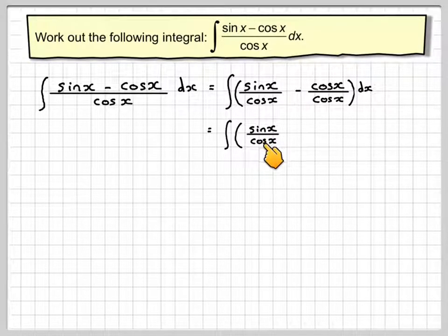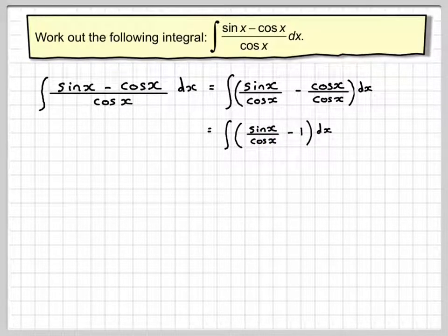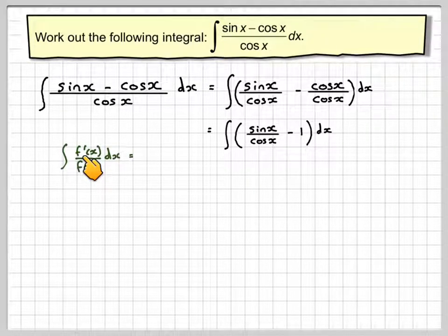So it becomes the integral sin x over cos x minus 1 dx. Now sin x over cos x is of this type of integral.